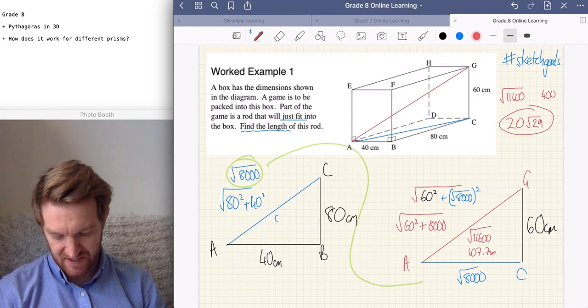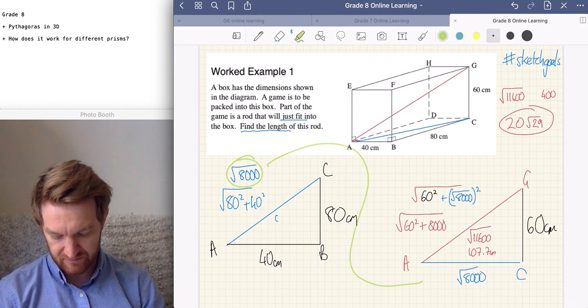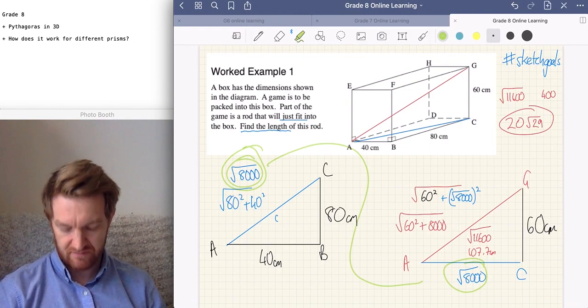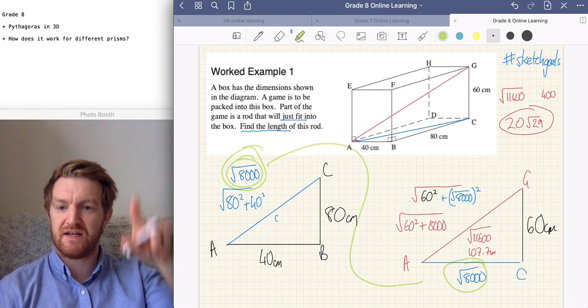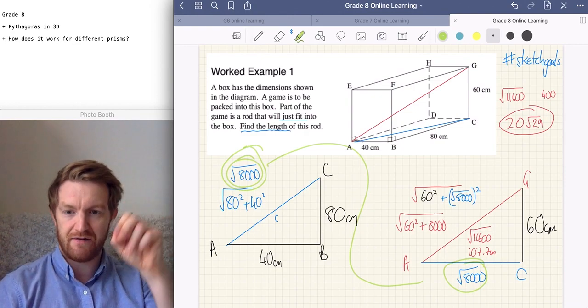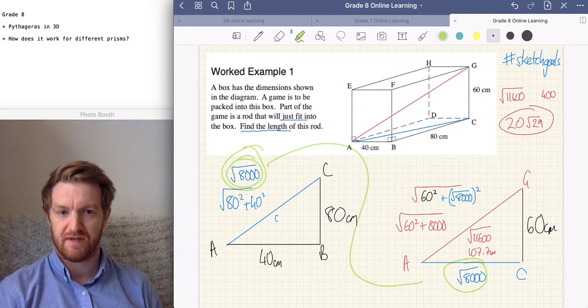So, keeping it as a root is really important. Two sketches. Notice I've color-coded them. Do the base first, then the one you want to find. Sketch one, sketch two, and you carry that value forwards. You keep it as a root. Let's try another one.